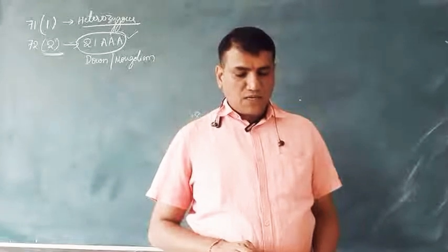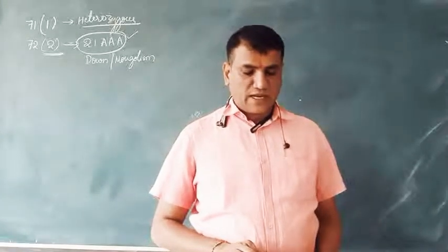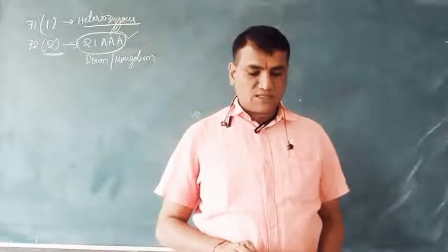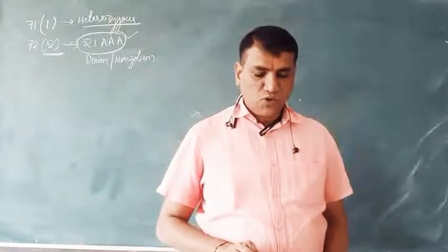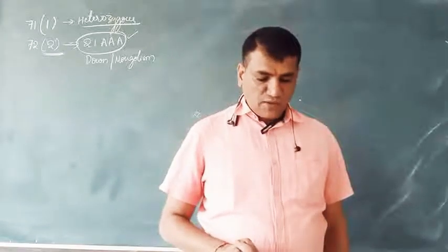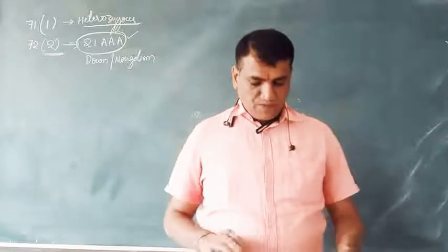Question 91: If non-disjunction of chromosome 21 is known to occur during division of a secondary oocyte in a particular woman, what is the chance that a mature egg arising from this cell division will receive 21 chromosomes?